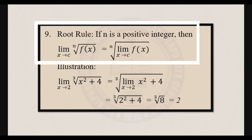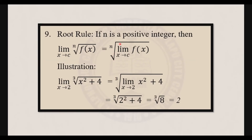Next, let's have the root rule. If n is a positive integer, then the limit of the nth root of f of x as x approaches c is equal to the nth root of the limit of f of x as x approaches c. For example, find the limit of the cube root of x squared plus 4 as x approaches 2. That equals the cube root of the limit of x squared plus 4 as x approaches 2. Following the sum rule, we have the cube root of 2 squared plus 4. 2 squared is 4, plus 4 is 8, and the cube root of 8 is 2. So the limit is 2.